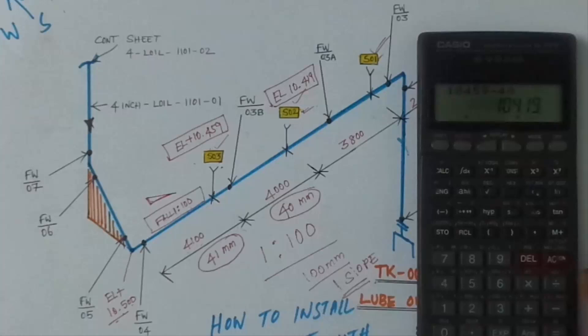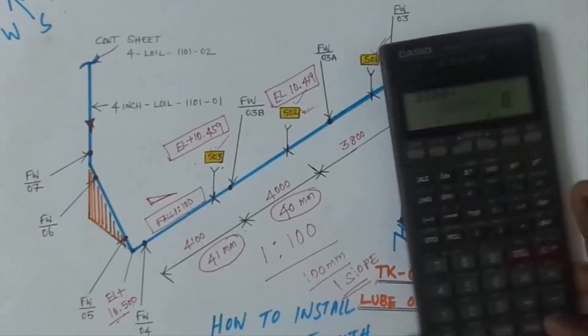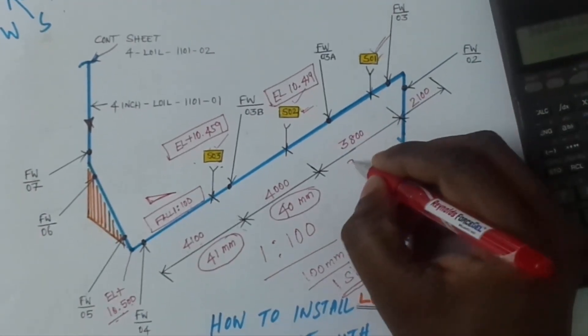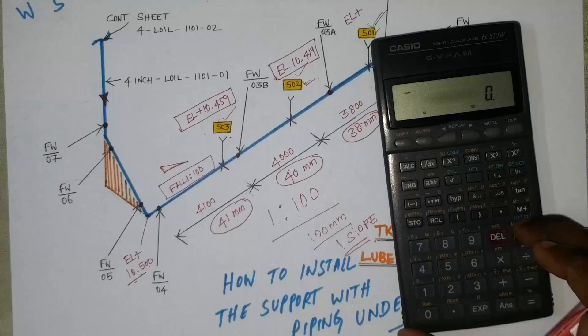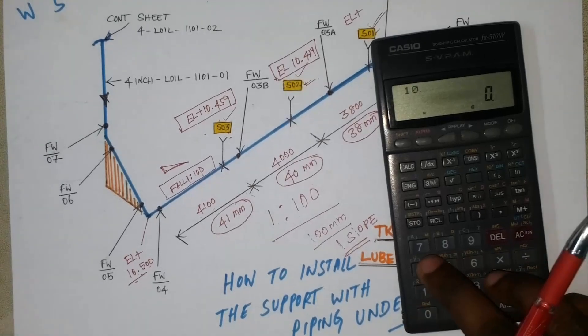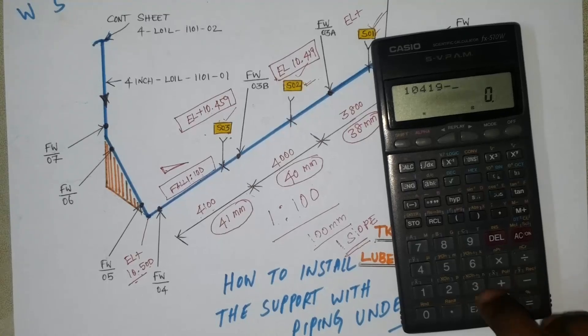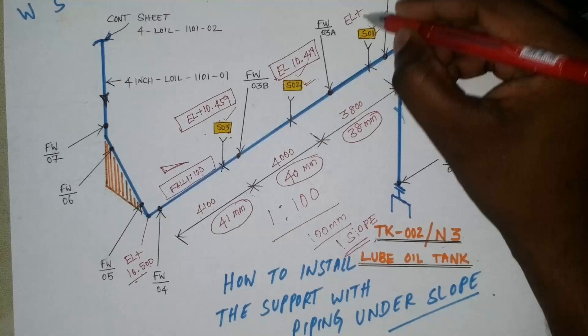So 3.5 meter, 1 is 100, so 38 mm in difference. So from last elevation 10 meter 419 minus 38 mm, so elevation is 10.381 mm for support number 1.